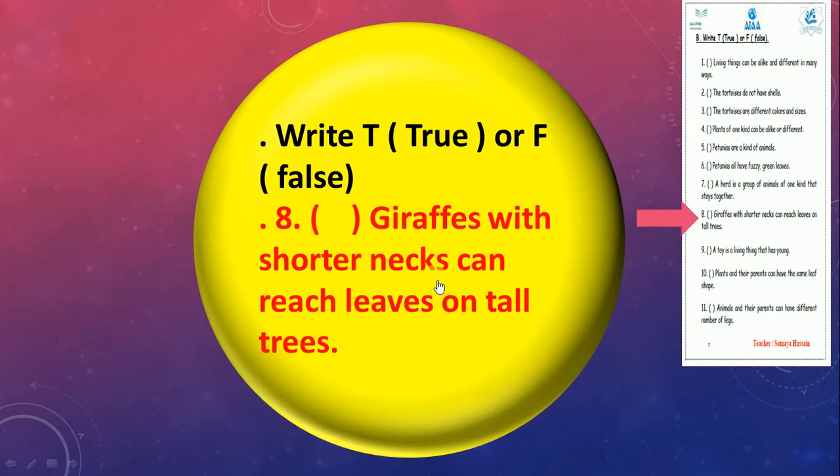Number seven: A herd is a group of animals of one kind that stays together. Yeah, like a family, true, but they have to be the same kind. Super, number seven. Giraffes with shorter necks can reach leaves on tall trees. No, they have shorter necks, they can't reach those high leaves, so F, false.